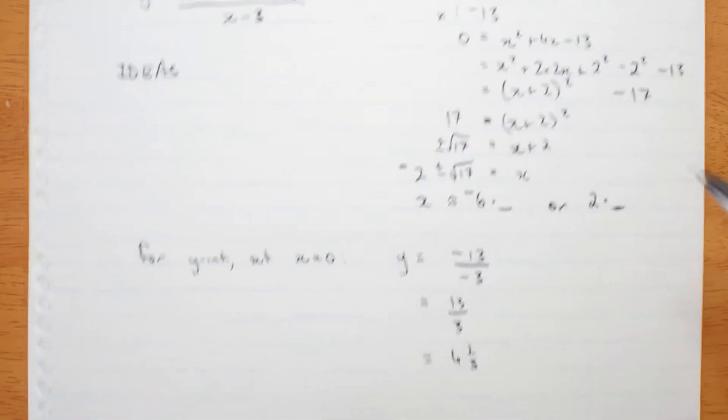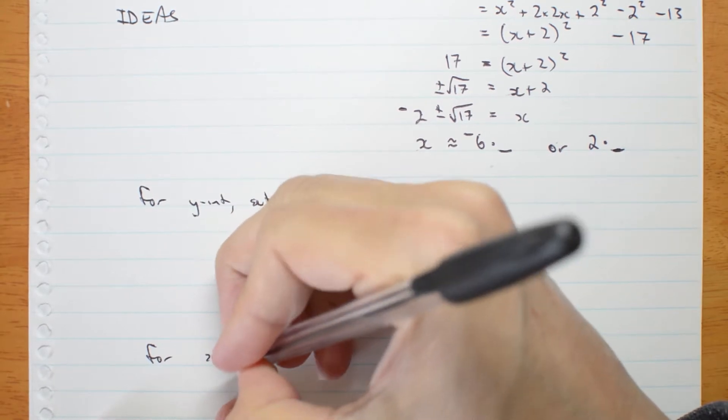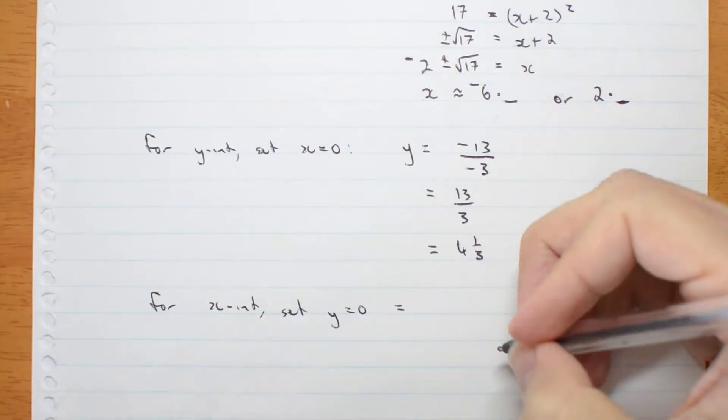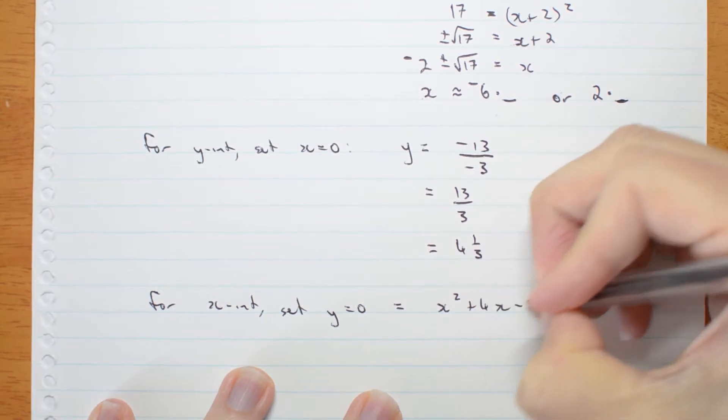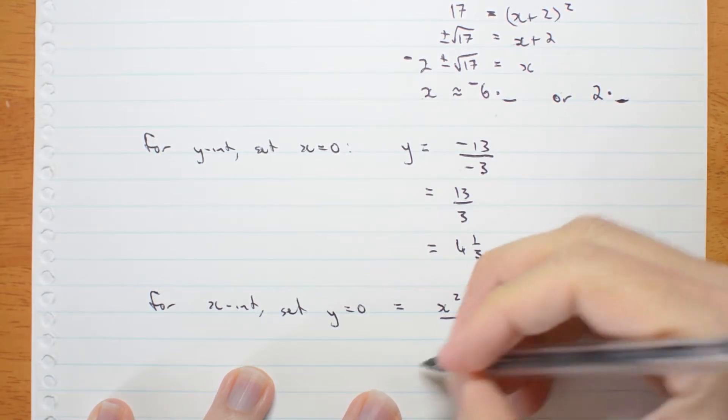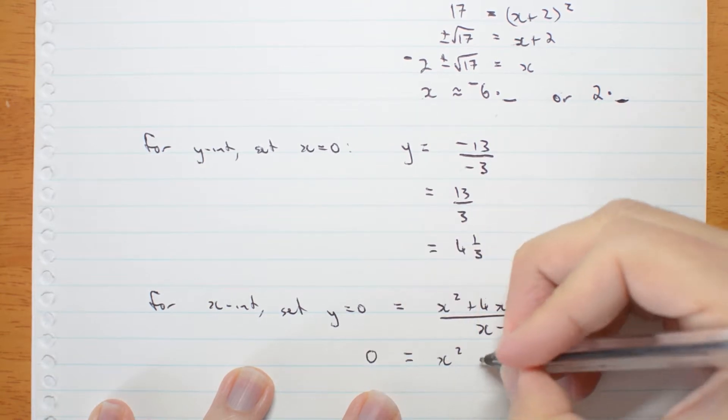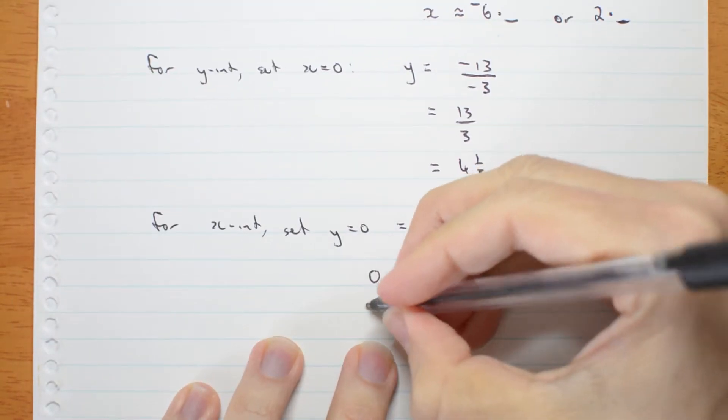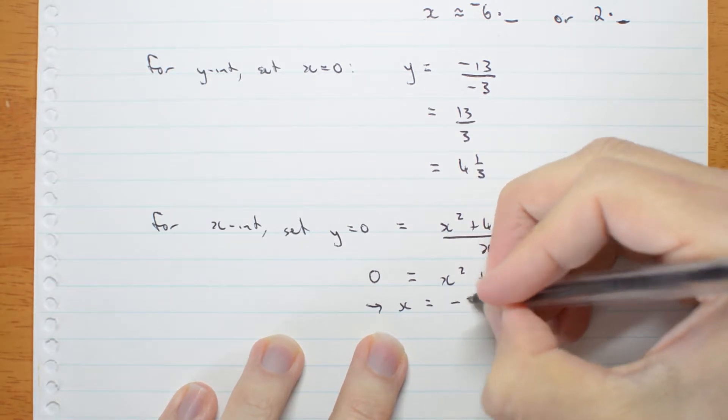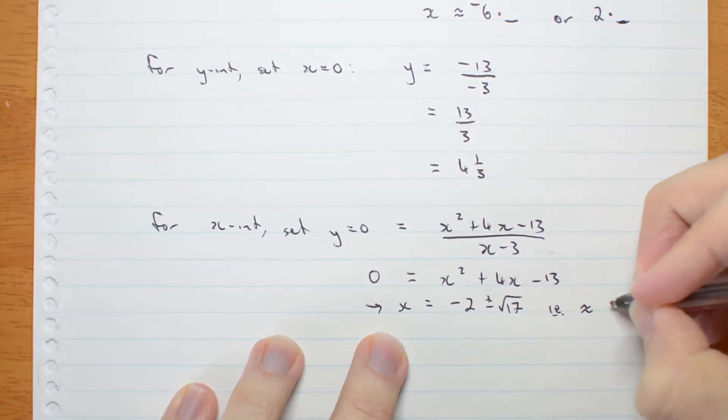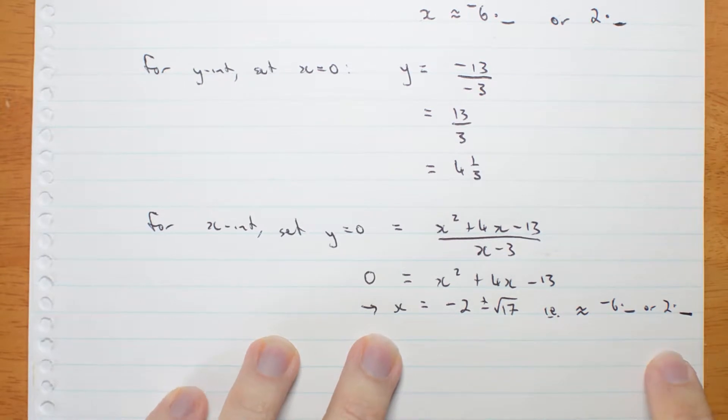For the x-intercept, set my y equal to 0. Well that's the function I had. x squared plus 4x minus 13 over x minus 3. If I'm equal to 0 I don't care what's on the bottom. I only want what's on the top. And I already solved this equation up here and I got this. x is negative 2 plus or minus root 17, i.e. approximately negative 6 point something small or 2 point something small. And that'll be good enough for me to sketch.